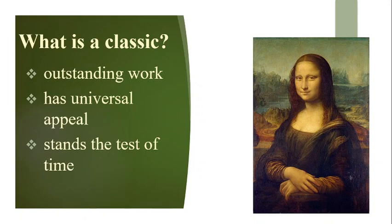Let us try to understand what the term classic means. I am sure all of you are looking at the painting of Mona Lisa on the slide. A classic is simply defined as an outstanding work of art. It can be a painting, a novel, a sculpture, a piece of architecture, or a building like the Taj Mahal for instance. A classic has got universal appeal and it will essentially be of the highest quality. The most important feature that determines what a classic is, is that it stands the test of time.